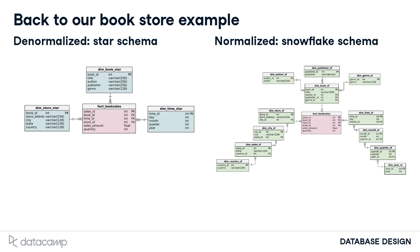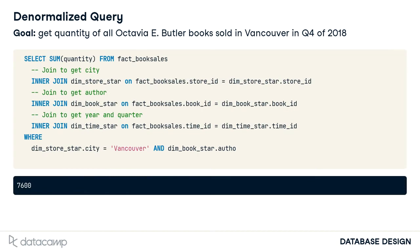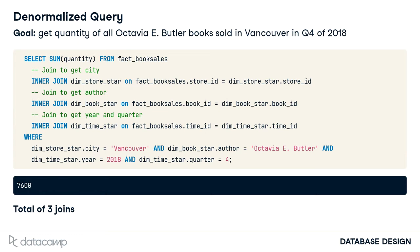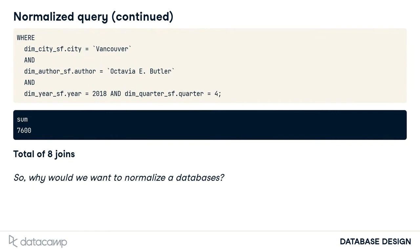The normalized database looks way more complicated, and it is in some ways. For example, let's say you wanted to get the quantity of all books by Octavia E. Butler sold in Vancouver in quarter four of 2018. Based on the denormalized schema, you can run the following query to accomplish this. It's composed of three joins, which makes sense based on the three dimension tables in the star schema. What would the query look like on the normalized schema? A lot longer — it doesn't even fit on one slide. There's a total of eight inner joins, which makes sense based on the snowflake schema diagram. The normalized snowflake schema has considerably more tables, meaning more joins, which means slower queries.